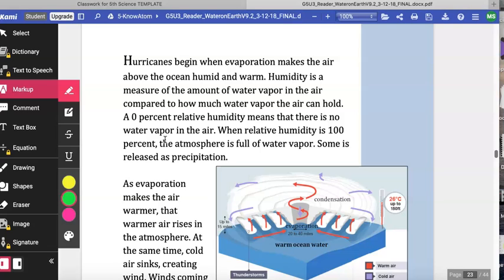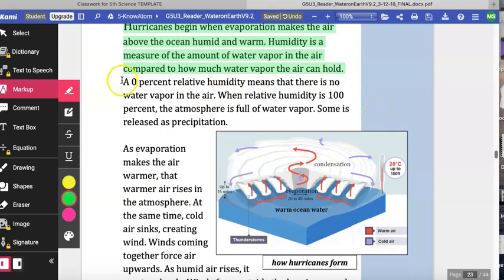Hurricanes begin when the evaporation makes the air above the ocean humid and warm. Humidity is a measure of the amount of water vapor in the air compared to how much water vapor the air can hold. A 0% relative humidity means that there is no water vapor in the air. When relative humidity is 100%, the atmosphere is full of water vapor. Some is released as precipitation.